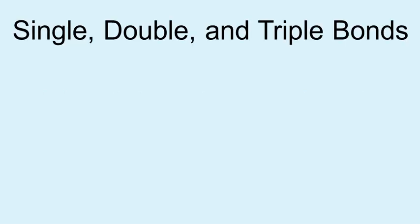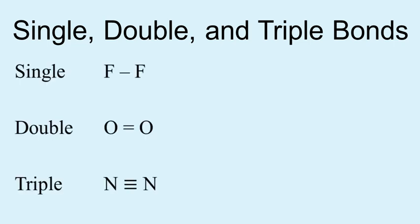Let's take a look at the three main types of bonds you can have. You can have single bonds, double bonds, and sometimes you can even have triple bonds. Here are three examples in fact.